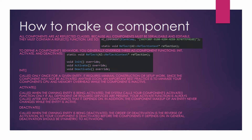In the activate function, it's called when the owning entity is being activated. The system calls your component's activate function only if all dependent or required services are present. Your activate function is always called after any components that it depends on. The component makeup of an entity never changes while the entity is active, so if you want to change what components are on an entity, you have to deactivate the entity then reactivate it. In deactivate, it's called when the owning entity is being deactivated. The order of deactivation is the reverse of activation, and deactivation should be symmetric to activation.